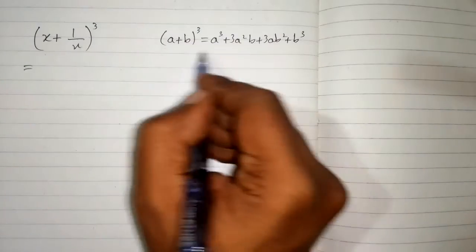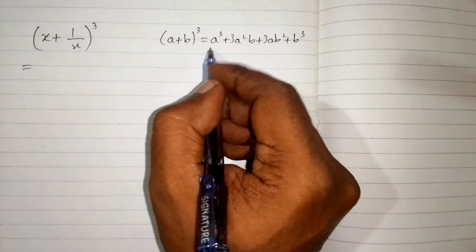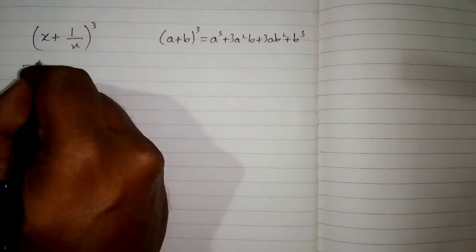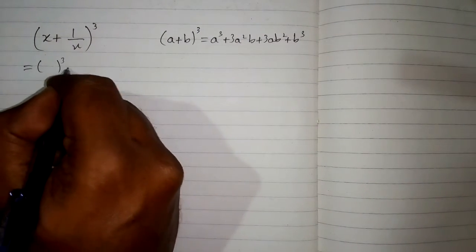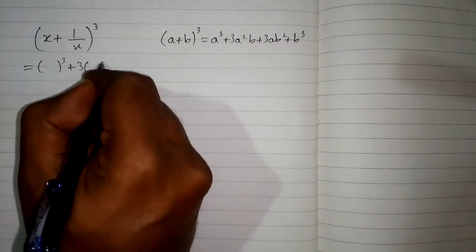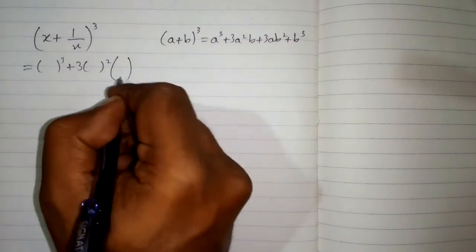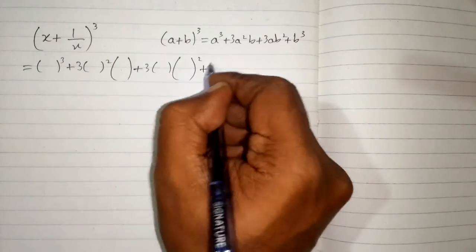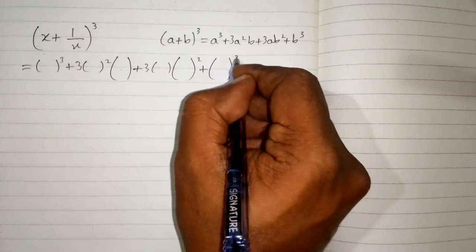First we will write the structure of the formula and put brackets in place of a and b. This is a³ plus 3a²b plus 3ab² plus b³.